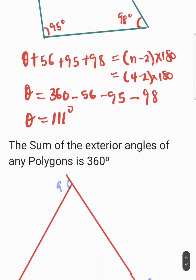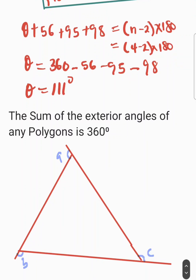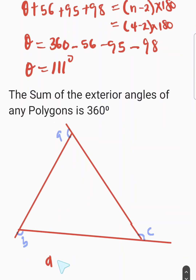The last rule states that the sum of the exterior angles of any polygon is 360 degrees — this is rule number 3. Looking at angle A, it is an exterior angle; angle B is an exterior angle; and angle C is also an exterior angle — they are all outside this triangle. So the rule says A plus B plus C equals 360 degrees. This is the general rule for the sum of exterior angles of any polygon.